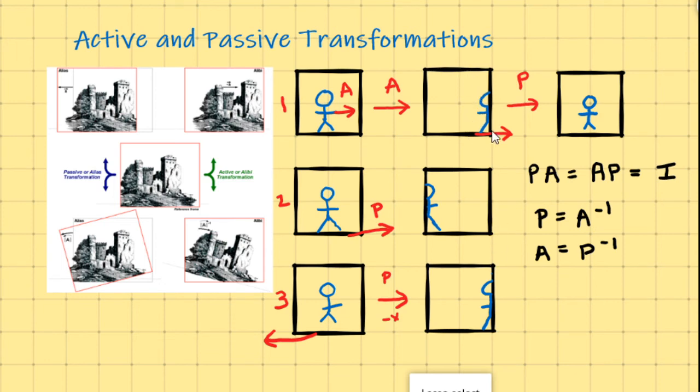So you can see that's the same as this situation number one. Situation number three, you have the same result. What that tells you is that an active transformation in the positive x direction is the same thing as a passive transformation in the negative direction. They work kind of oppositely to one another.